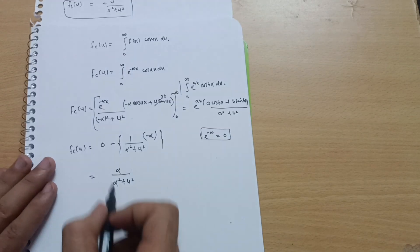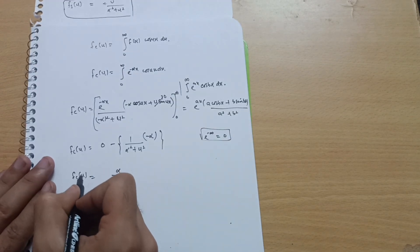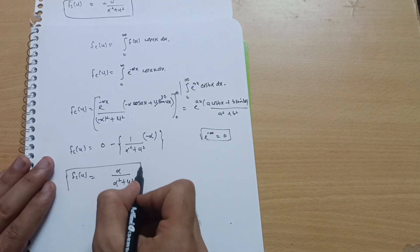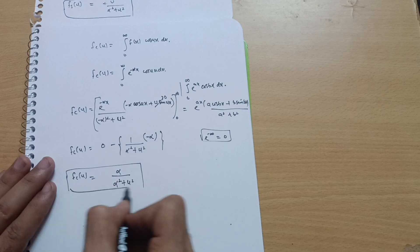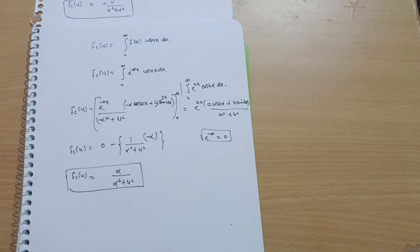So the Fourier cosine transform is α/(α² + u²). This is all about question number 4b — a very simple problem purely based on formulas. You should remember these formulas to handle these varieties of problems. Thanks for watching.